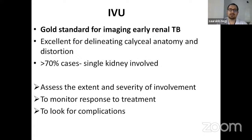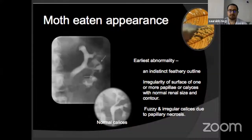IVU is the gold-standard imaging for early renal TB. It is excellent for delineating anatomy, caliceal anatomy and distortion. More than 70% of cases generally involve a single kidney. It is used to assess the extent and severity of involvement, monitor response to treatment, and look for complications. This IVU film shows the earliest abnormality — irregular calyces due to papillary necrosis with normal renal size and contour, giving a moth-eaten appearance.